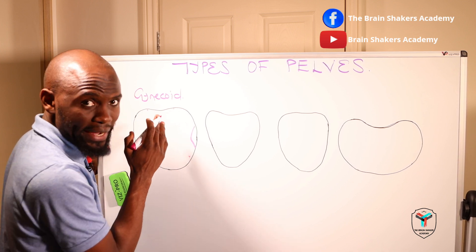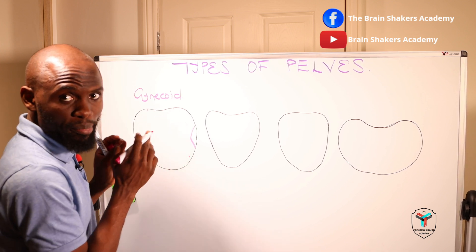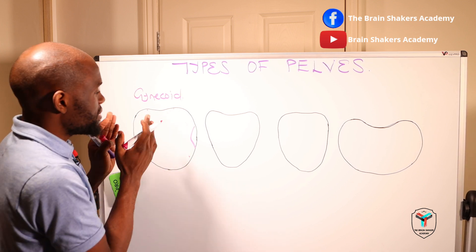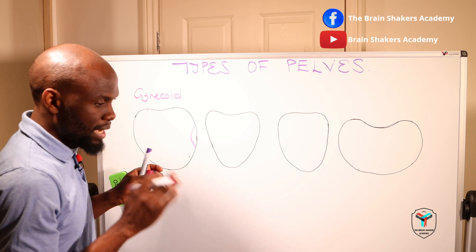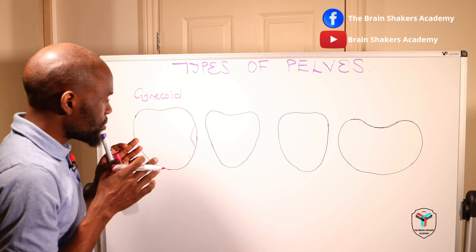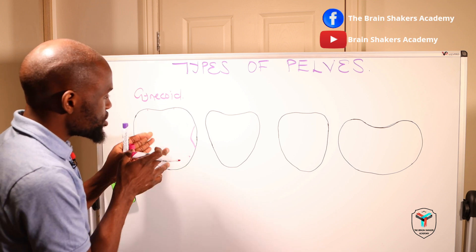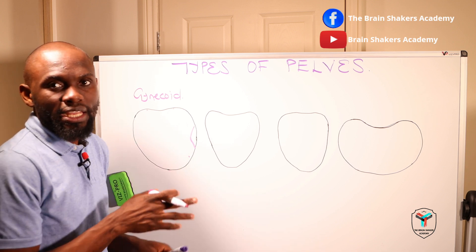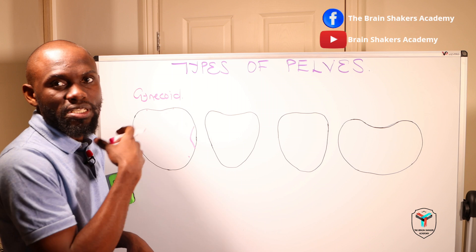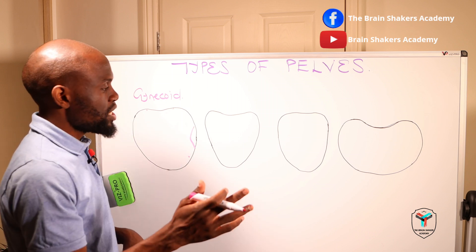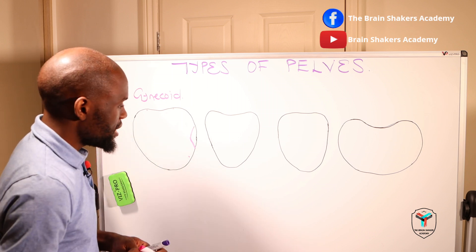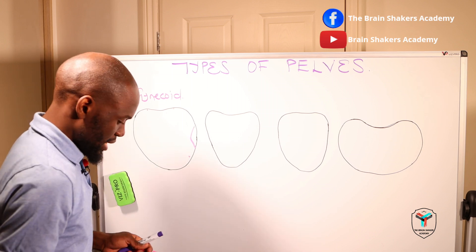With the gynecoid pelvis, the fetus can present or engage in any diameter, and it has the capacity to allow labor to progress without any problems.